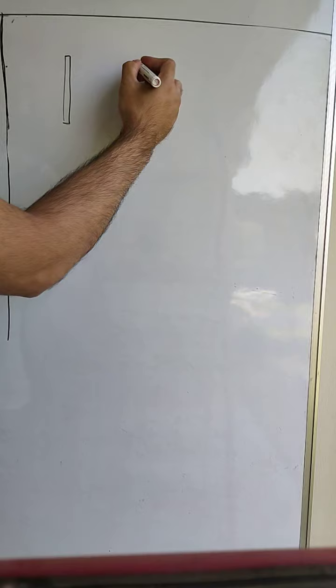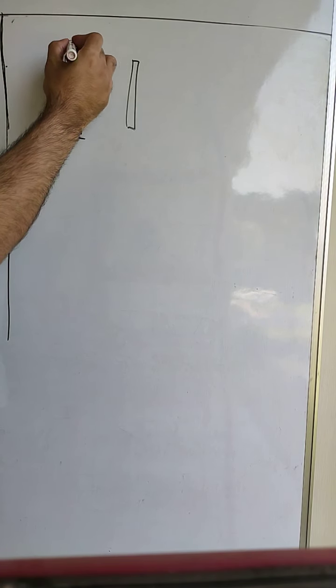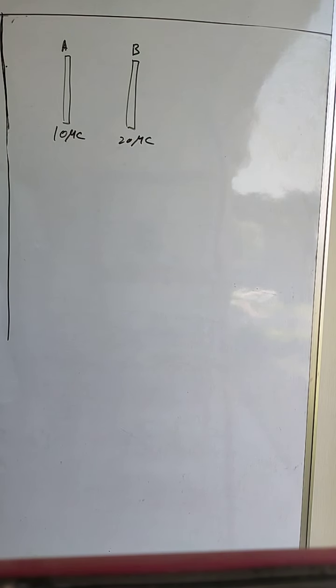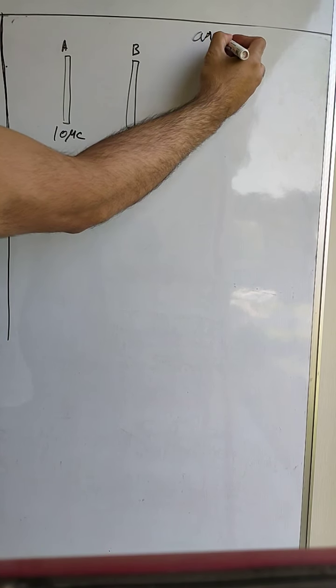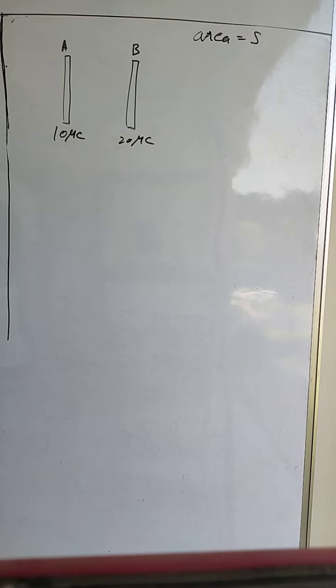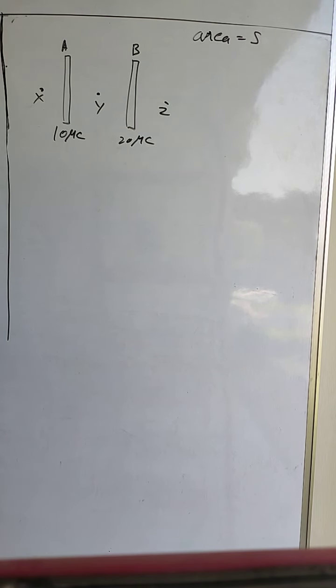Let us do a solved example on the system of parallel plates. We have two large plates A and B given charges: 10 microcoulombs on plate A and 20 microcoulombs on plate B. The area of each plate is S. We have to find the charge distribution on all four surfaces 1, 2, 3, and 4, and find the electric field at three given points x, y, and z.